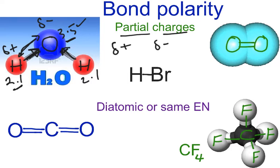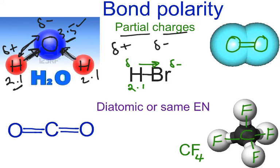Likewise, looking at H and Br: hydrogen is approximately 2.1, and bromine has a higher electronegativity, so bromine wins the tug of war. Since bromine has a higher electronegativity than hydrogen, bromine will have a partial negative charge and hydrogen will have a partial positive charge.